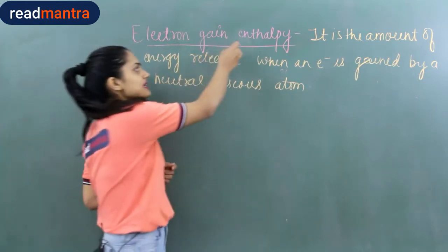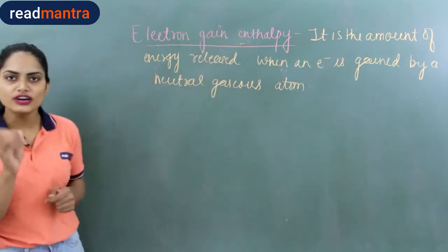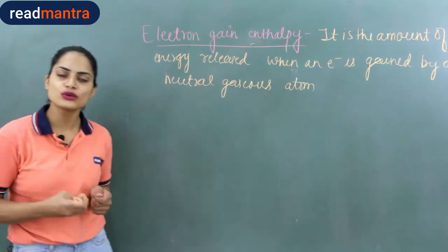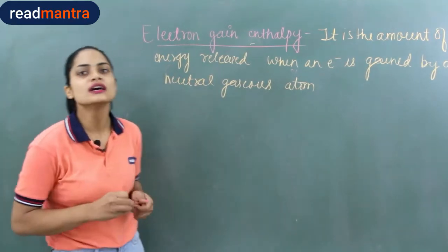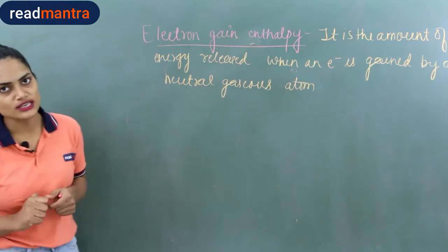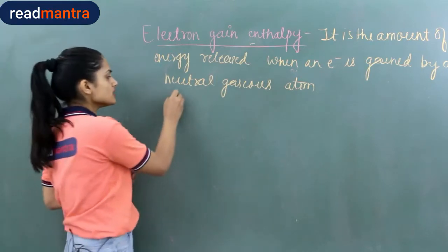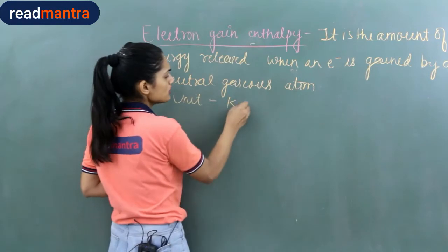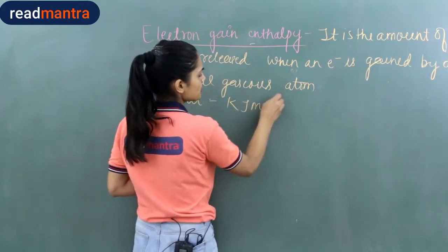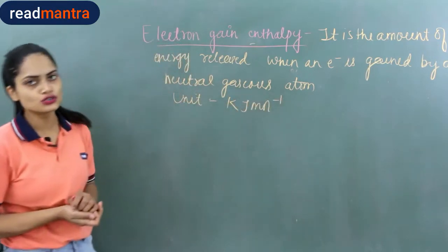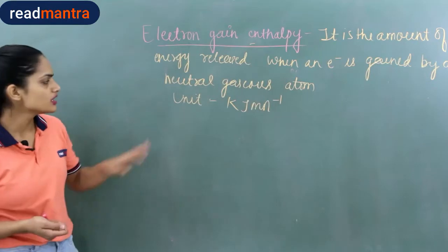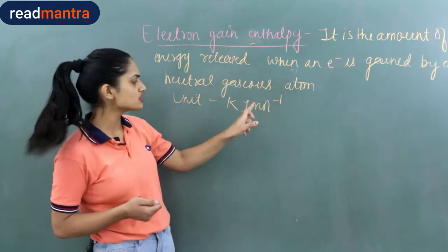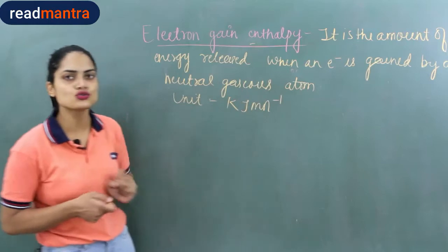Because we talk about enthalpy here, we consider one mole of neutral gaseous atoms. Whatever energy is released for one mole is the electron gain enthalpy. The unit is kilojoule per mole, because enthalpy is measured per mole.